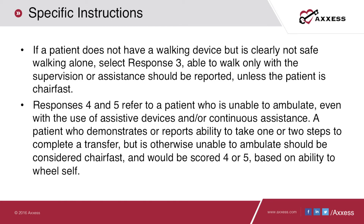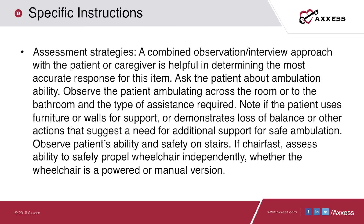Response number five is indicated when the patient is unable to ambulate and is unable to will self. Utilize a combination of observation and interview approach to assess the patient's ambulation abilities. You may want to ask the patient to show you where his or her medications are kept and watch the patient ambulate. Observe how safe the patient is while ambulating or willing themselves.